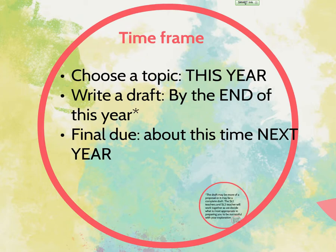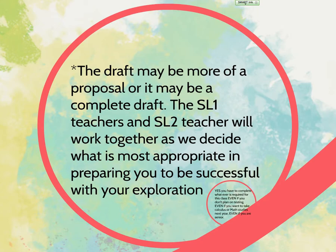The time frame is subject to change, but our goal right now is to have a topic by the end of this year, then write a draft by the end of this year, and the final is due about this time next year. In the past, the draft has been more like a proposal — not necessarily a complete draft — where students write what the topic is, why it's interesting to them, what kind of math they think they will use, and how they're going to pull it off.